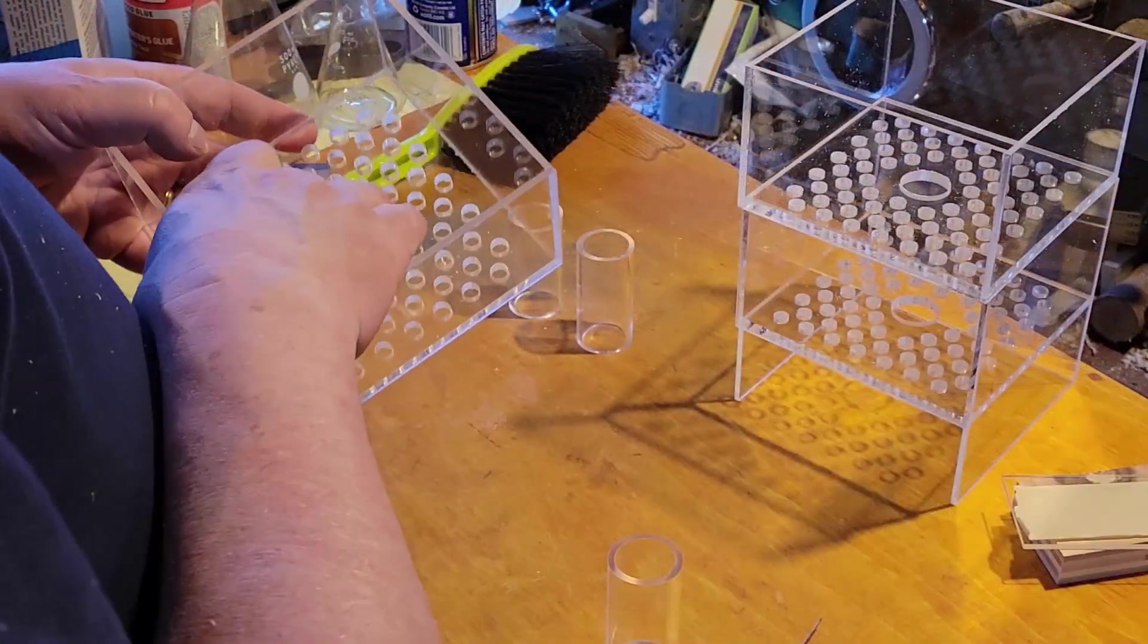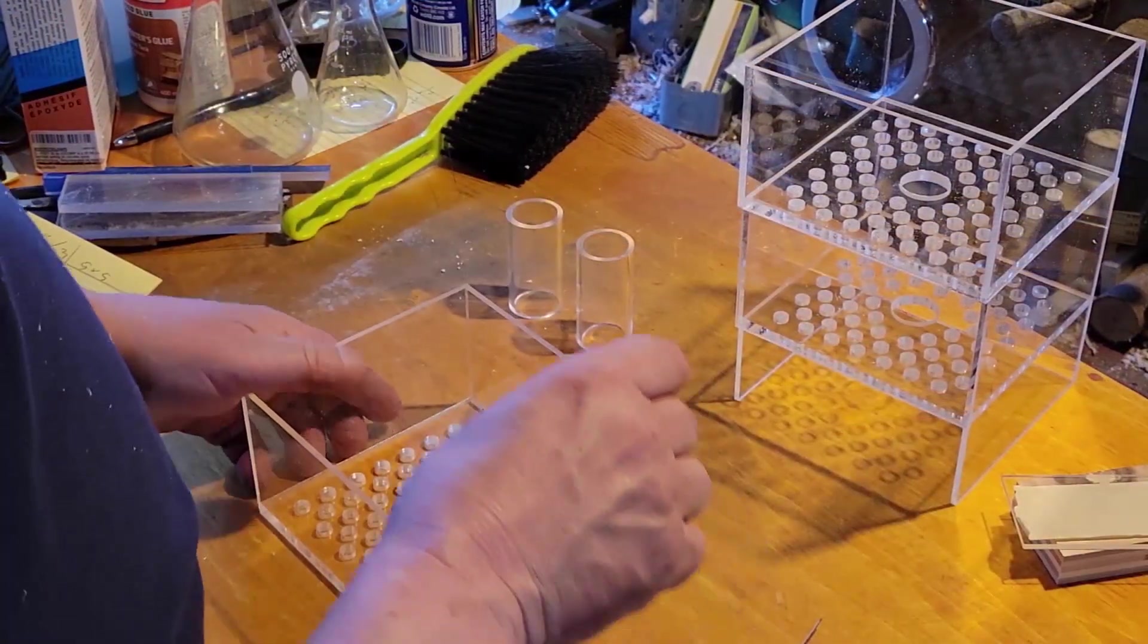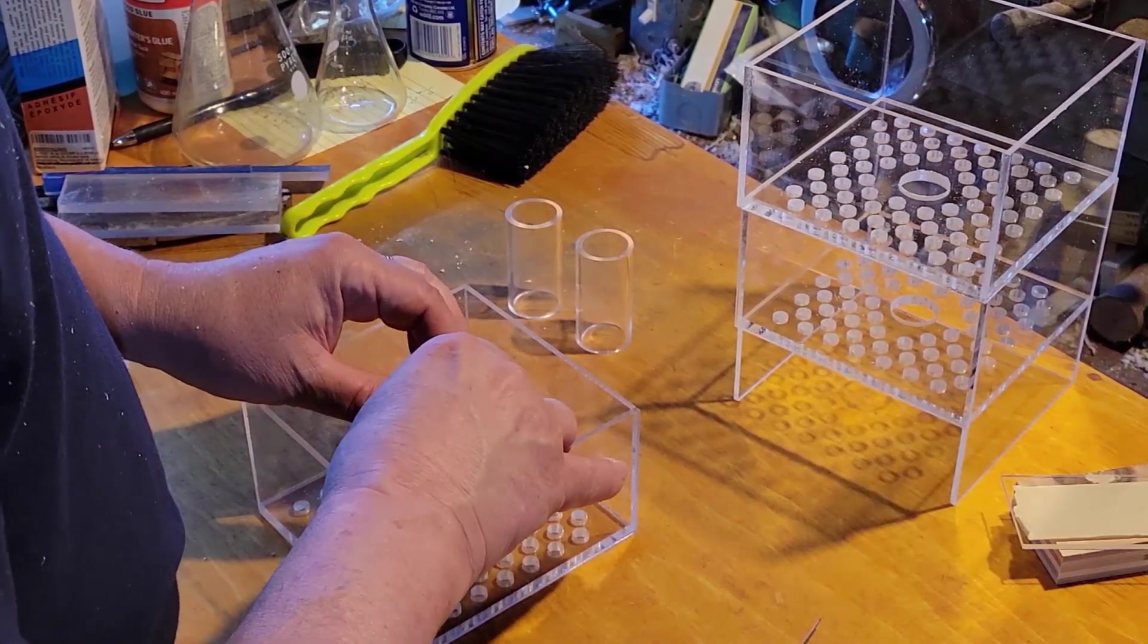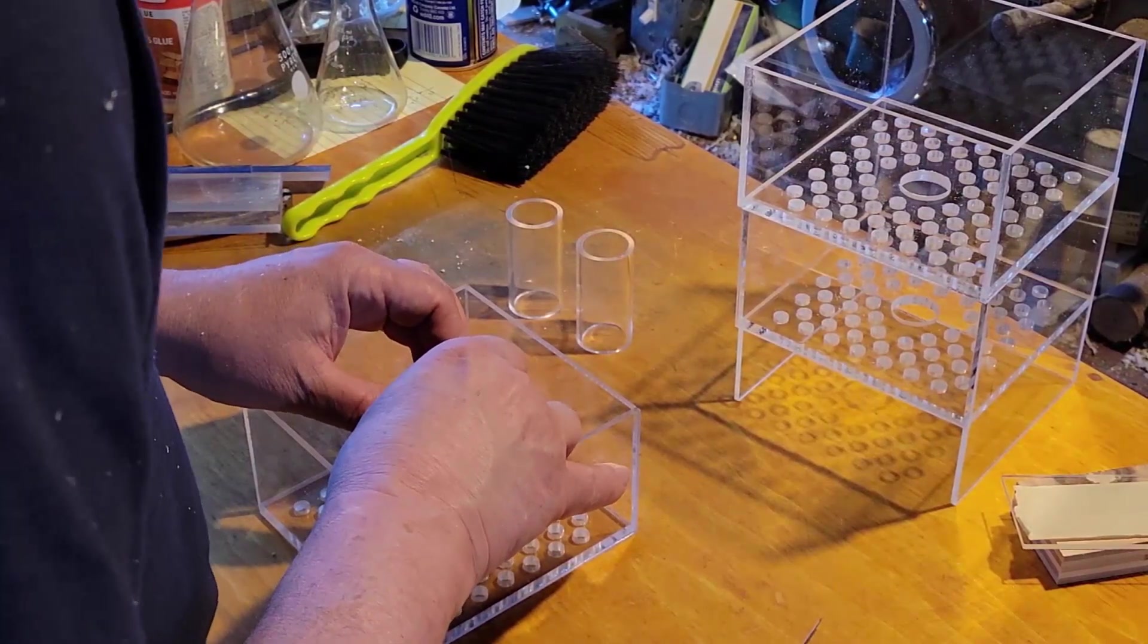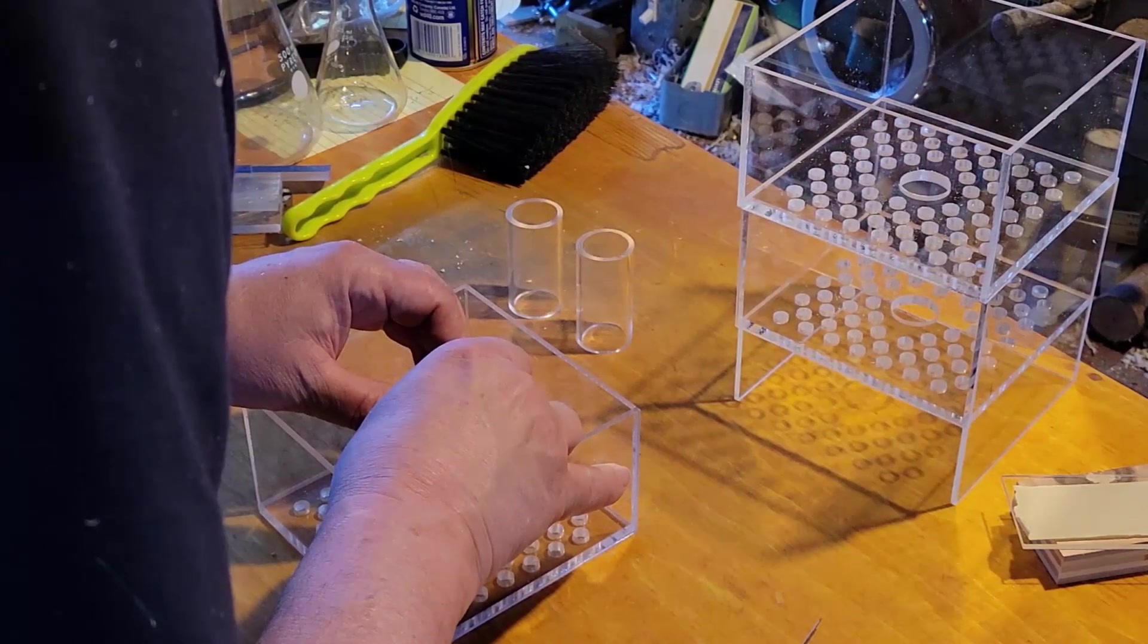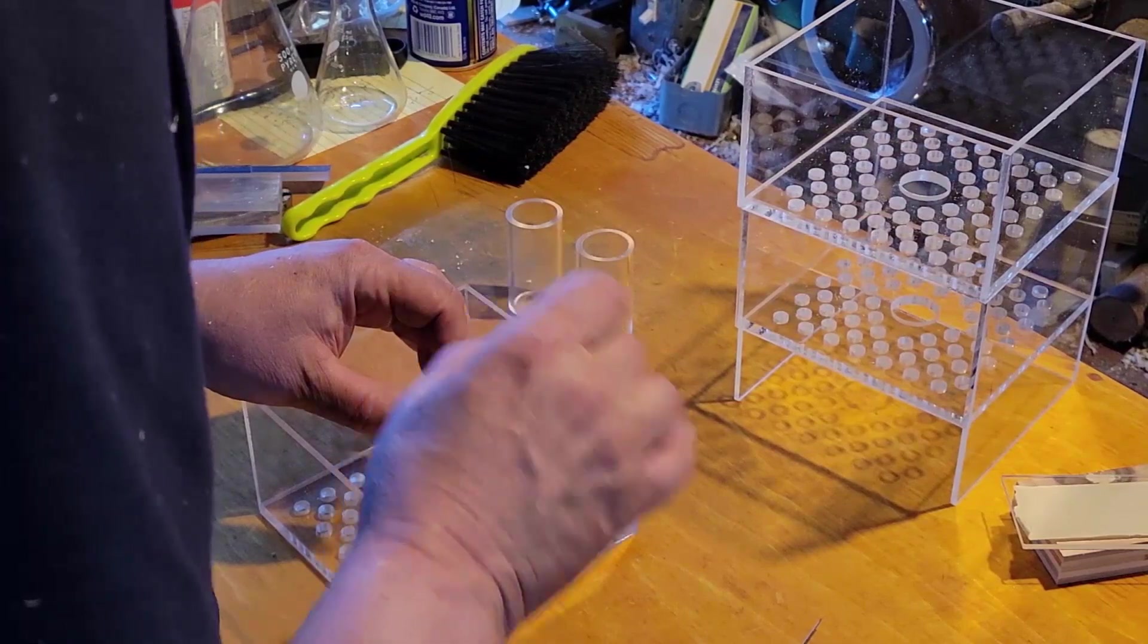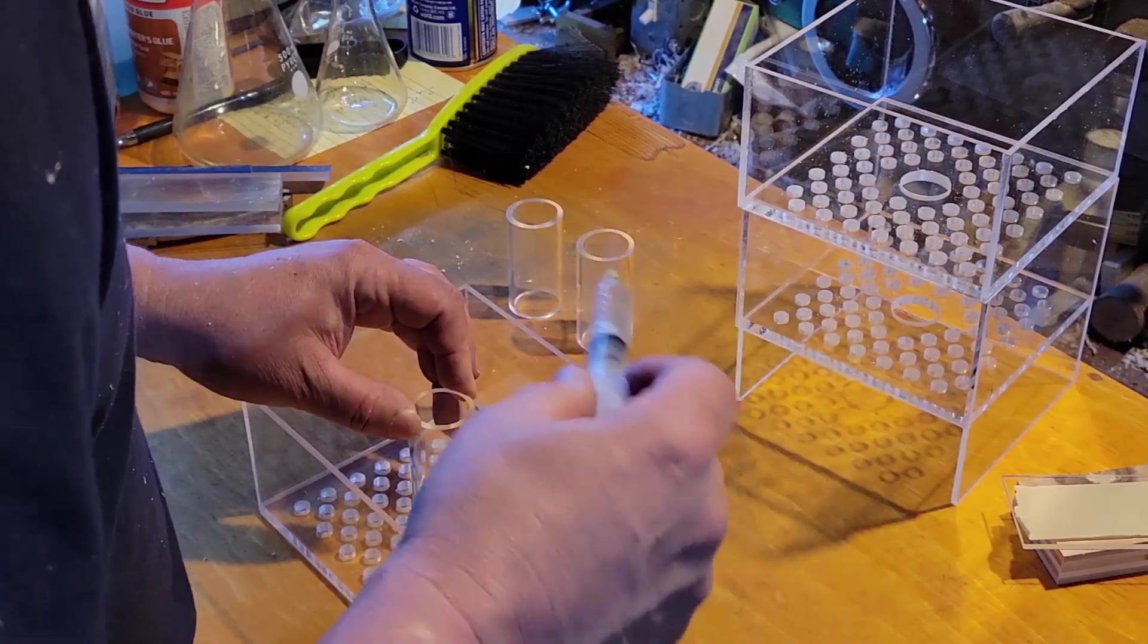These are the clear acrylic tubes. They're going to easily slide over the PVC pipe that's going to go up the middle of this. It's there for ensuring that any of the media I put in this stays where it needs to be.